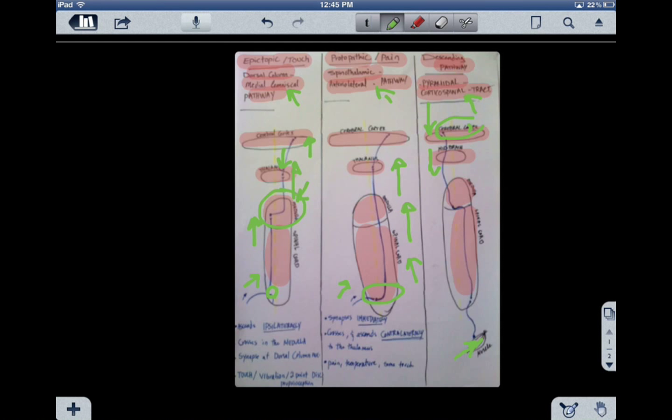Once we're at the midbrain, specifically at the cerebral peduncle, we go down to the medulla. Where exactly in the medulla? In the pyramids, here.